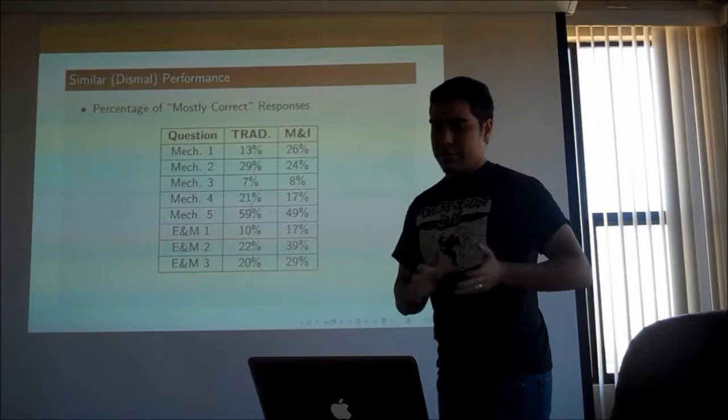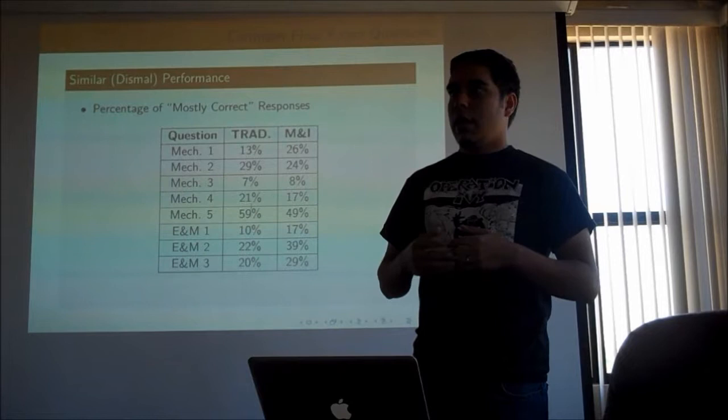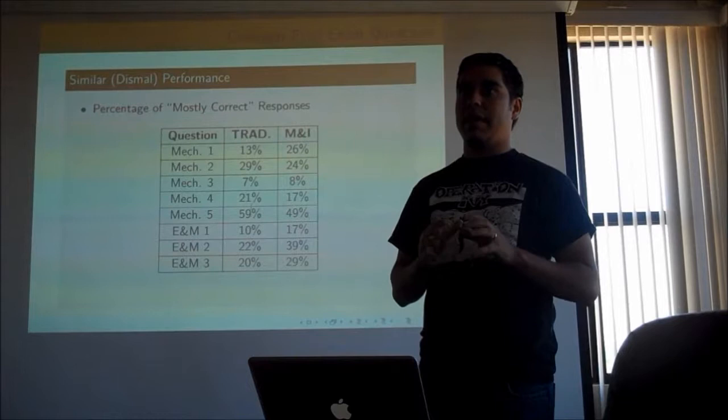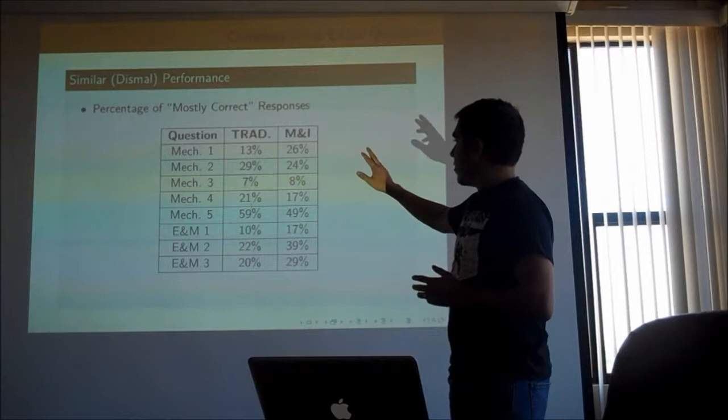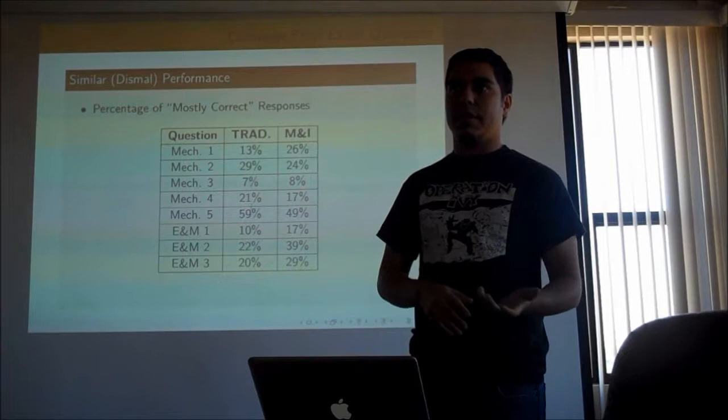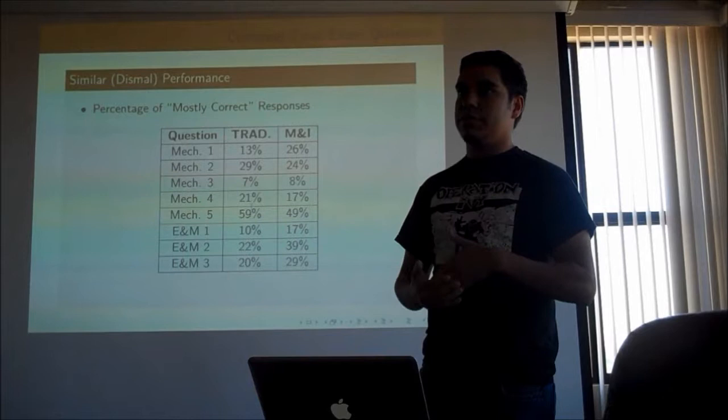On common final exam questions: if you give students complex questions they need to solve on pencil and paper and look at mostly correct responses — meaning they didn't make a lot of mistakes — the percentages sort of flip-flop back and forth depending on the topic. Matter and Interactions students tend to do better on E&M questions and on energy and angular momentum questions. They don't do better on kinematics-type questions.